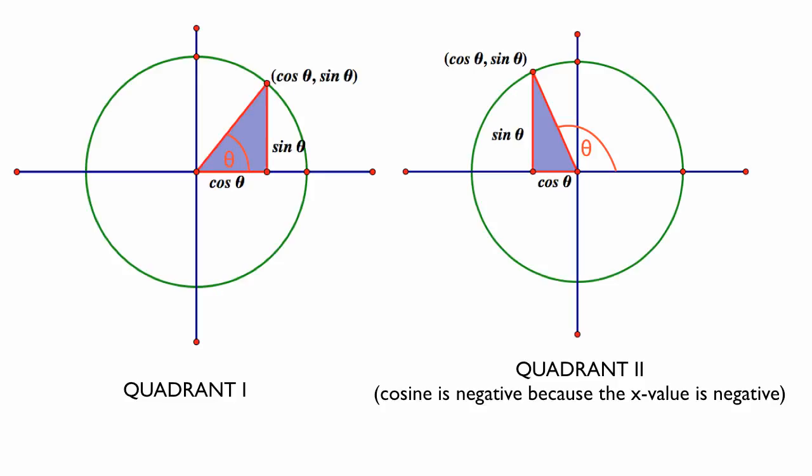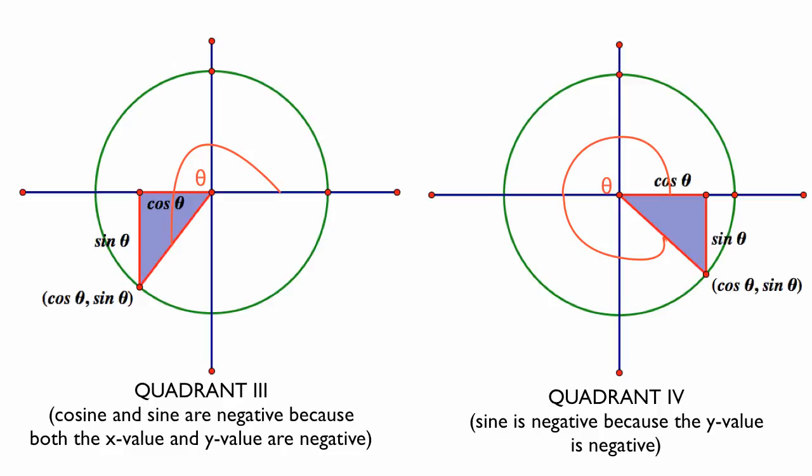In quadrant two, cosine is negative because the x-value of that point is negative. In quadrant three, if you extend the angle all the way, both cosine theta and sine theta are negative — that point has a negative x-value and a negative y-value. And for quadrant four, when we extend the angle and create the line, the point on the unit circle is again cosine theta sine theta, but sine is negative because the y-value at that point is negative.